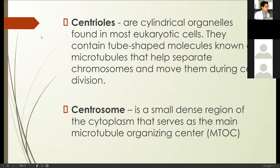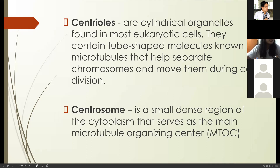Let's move on to centrioles. Centrioles are cylindrical organelles found in most eukaryotic cells. They contain tubular molecules known as microtubules that help move chromosomes during cell division. During cell division, chromosomes line up to prepare for division, and the centrioles move to separate or pull the chromosomes apart. Centrioles are responsible for pulling or separating the chromosomes during cell division. In your higher years, you will discuss how cell division works with centrioles and how spindle fibers pull the chromosomes.